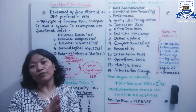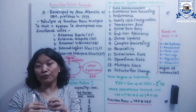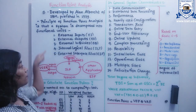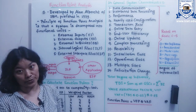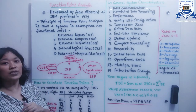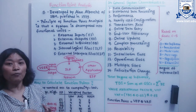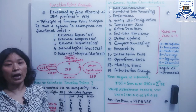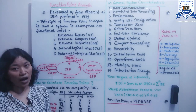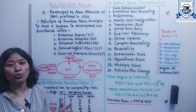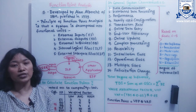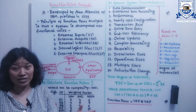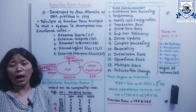When defining function point analysis, these five important functionalities of the system, as described by Albrecht, may each have some weighing factor. The complexity of these functional points can be low, medium or average, or high — and this varies from application to application. Some applications may have average function point complexity, while others may have very high complexity.